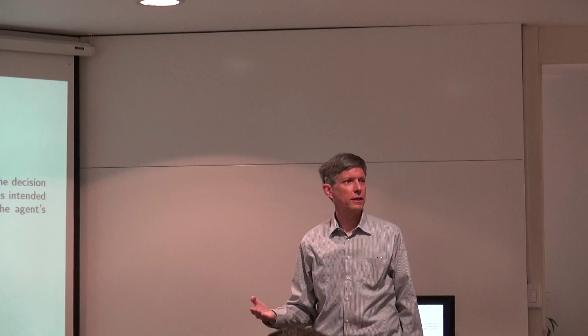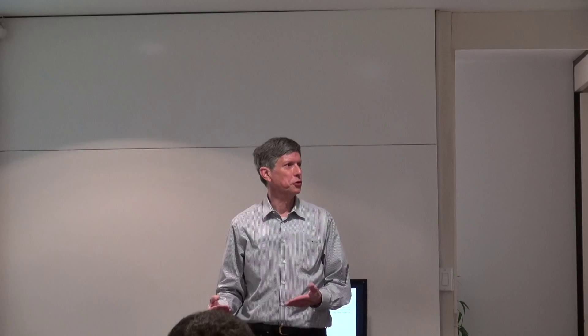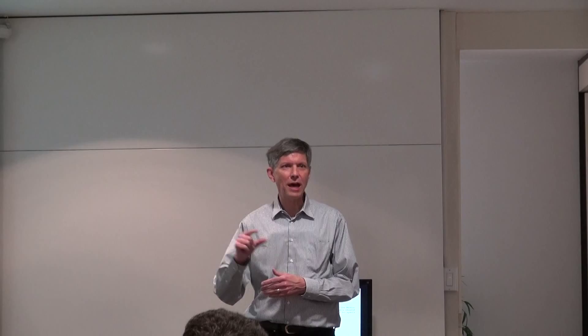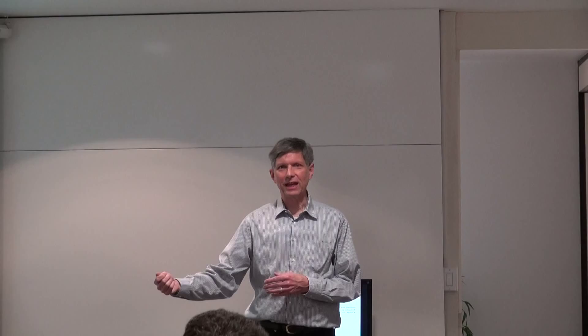Lots of people, starting with Allais, read Savage and part of their skepticism is saying: Savage, you're not really giving us revealed preference theory like you promised. And once we need a Boolean algebra of events even to define an act, it's a very tiny step to put a probability measure on that. If I'm a non-Bayesian, I want to get off the boat as soon as you tell me we need a Boolean algebra of events in order to define an act. So let's see what a theory would look like where you don't need that.